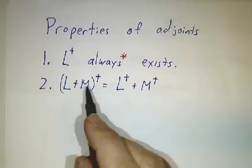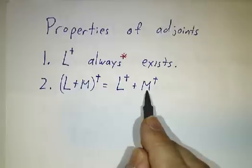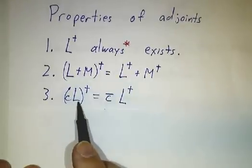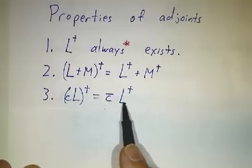The second is that the adjoint of the sum of two operators is just the adjoint of the first plus the adjoint of the second. The adjoint of a constant times an operator is not the constant times the adjoint—it's the complex conjugate of the constant times the adjoint.